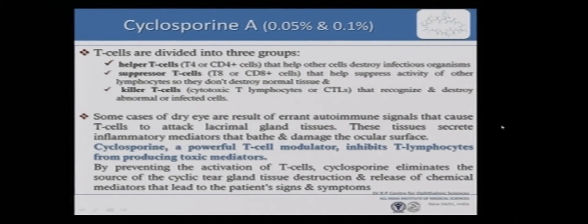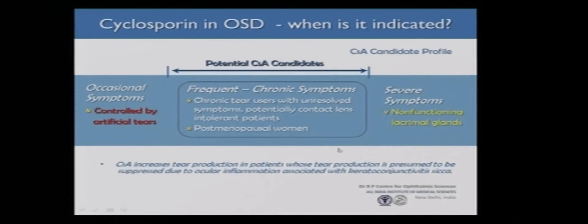The T cells are of three types: helper T cells, suppressor T cells, and killer T cells. The helper T cells, or CD4, destroy infectious organisms. The suppressor T cells help prevent or suppress the activity of other lymphocytes so that normal tissues are not damaged. Cytotoxic or killer T cells recognize and destroy abnormal or infected cells. There is a fine balance between these three in the system. When there are activated T cells, they release interleukins or inflammatory mediators — and this is the level at which cyclosporine acts. It is a powerful T cell modulator and inhibits T cells from producing toxic mediators, so when this molecular mechanism is causing damage on the ocular surface, that is when you need to add cyclosporine for these patients.